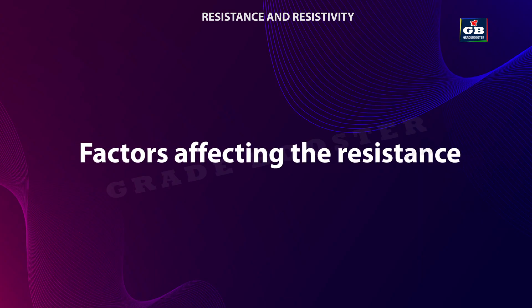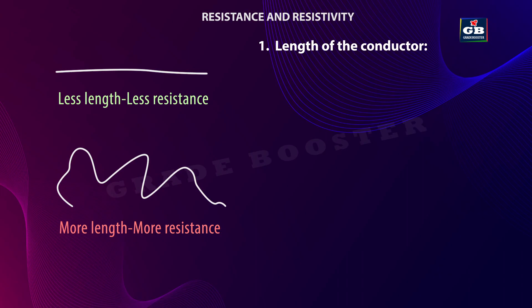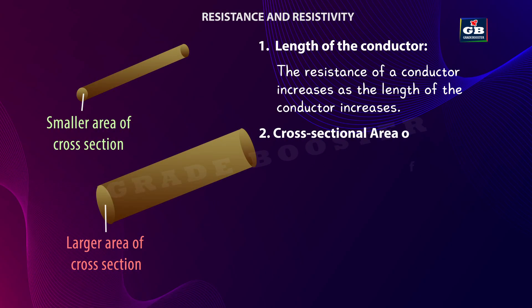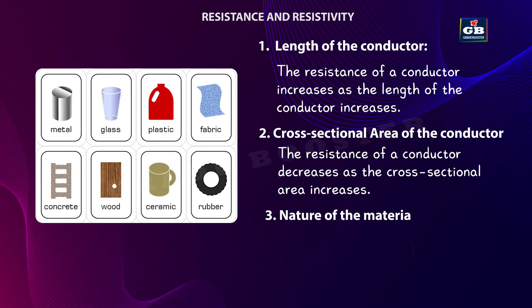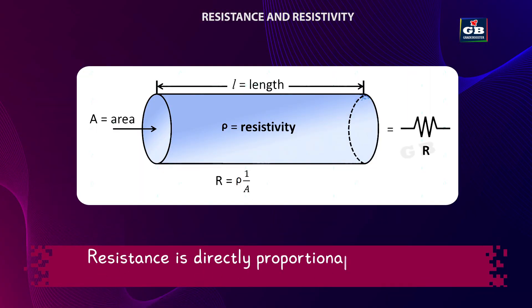Now let's see the factors on which the resistance of a conductor depends. Resistance depends on: 1. Length of the conductor — resistance increases as the length increases. 2. Cross-sectional area of the conductor — resistance decreases as the cross-sectional area increases. 3. Nature of the material. Resistance is directly proportional to the length of the conductor — as length increases, resistance also increases.